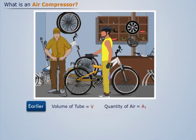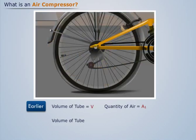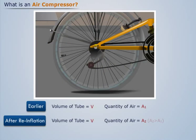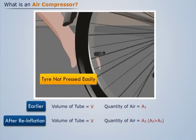After the tire has been re-inflated, we know that the volume of the tube remains around V, but now it contains more amount of air than earlier. Also we see that the tire is more bulged and now it is hard to press the tire.